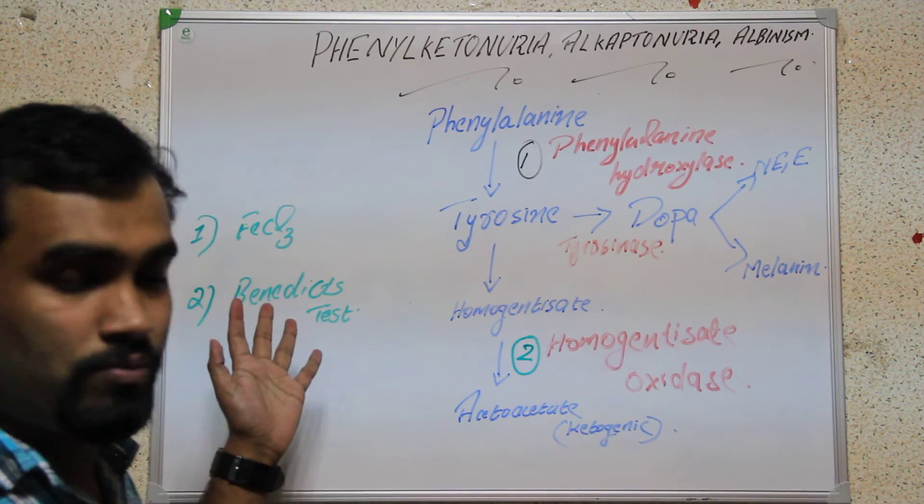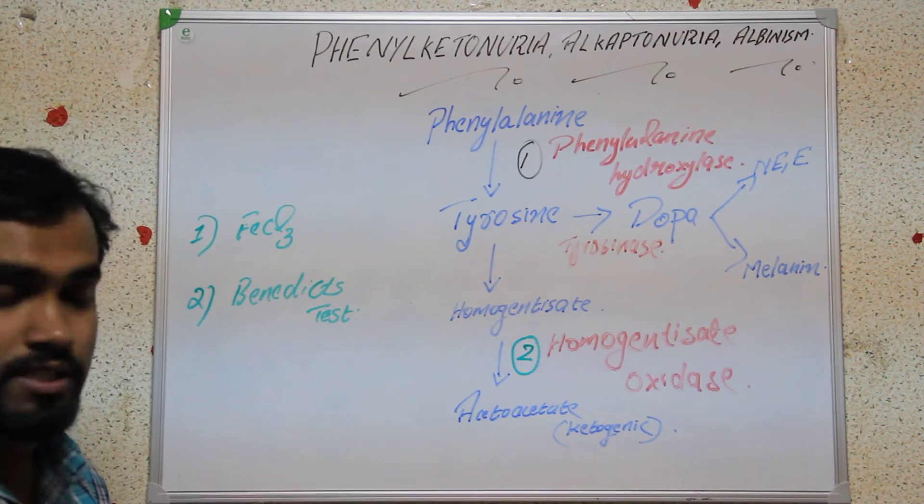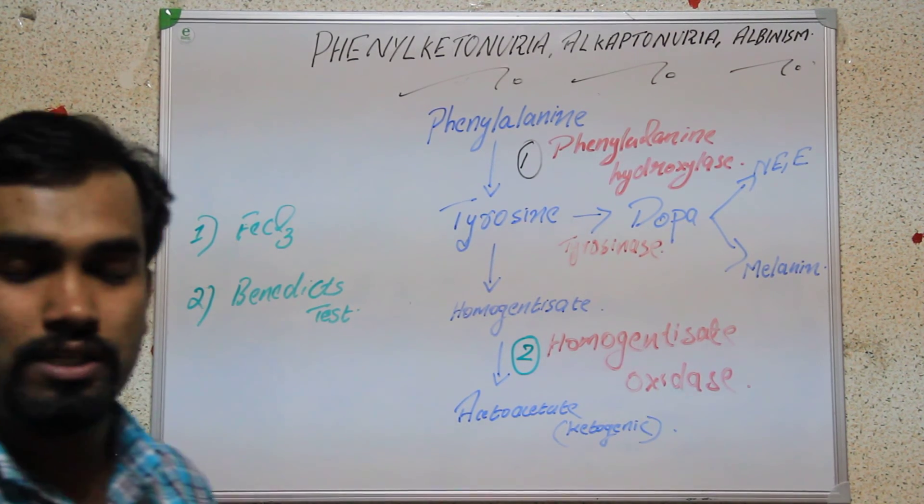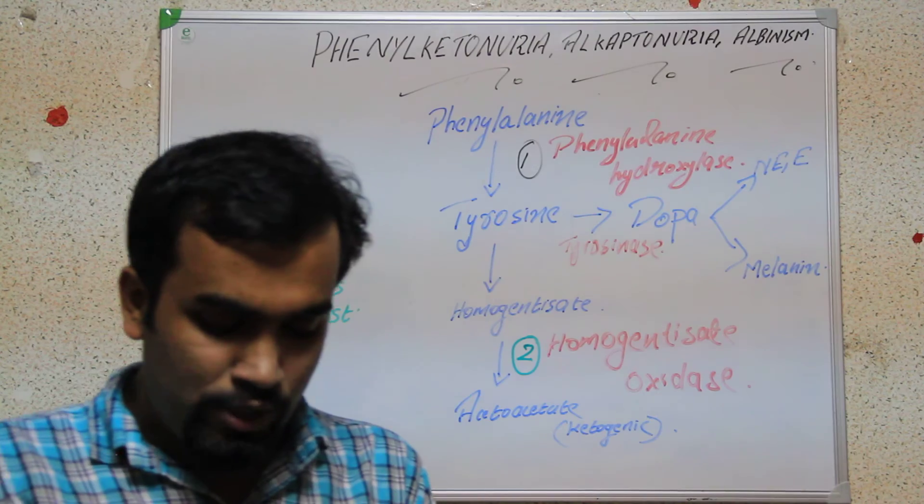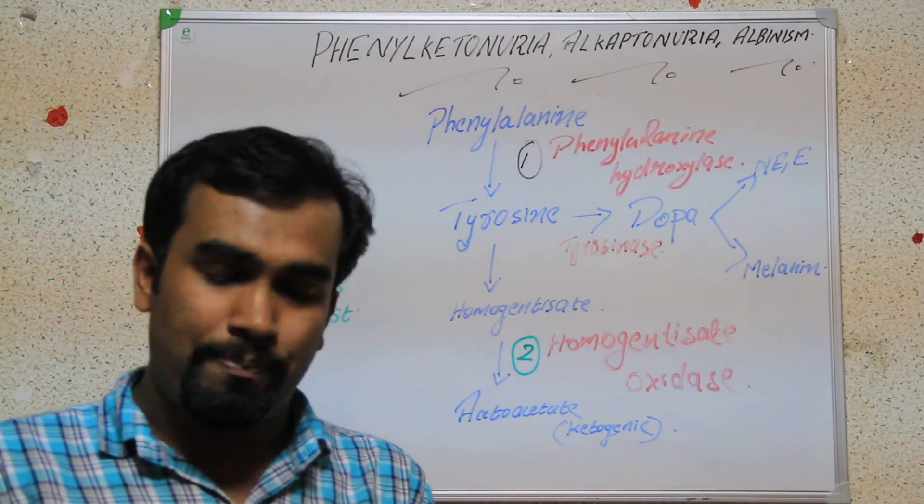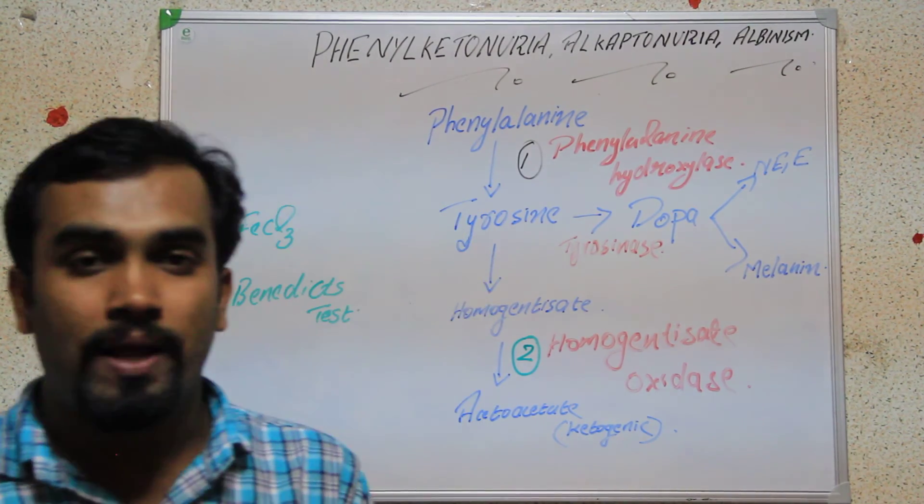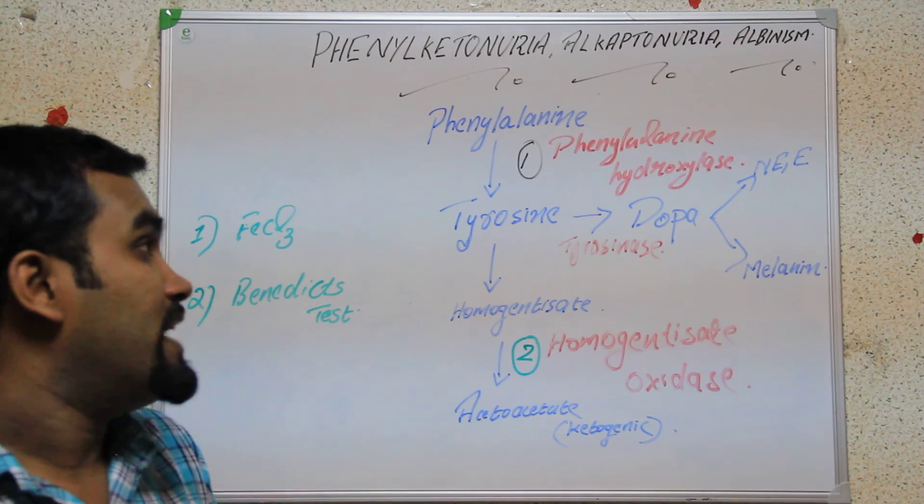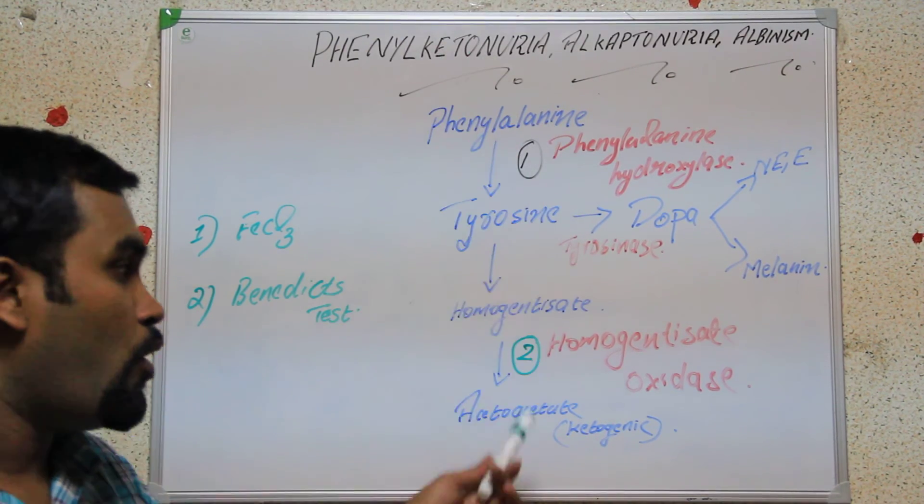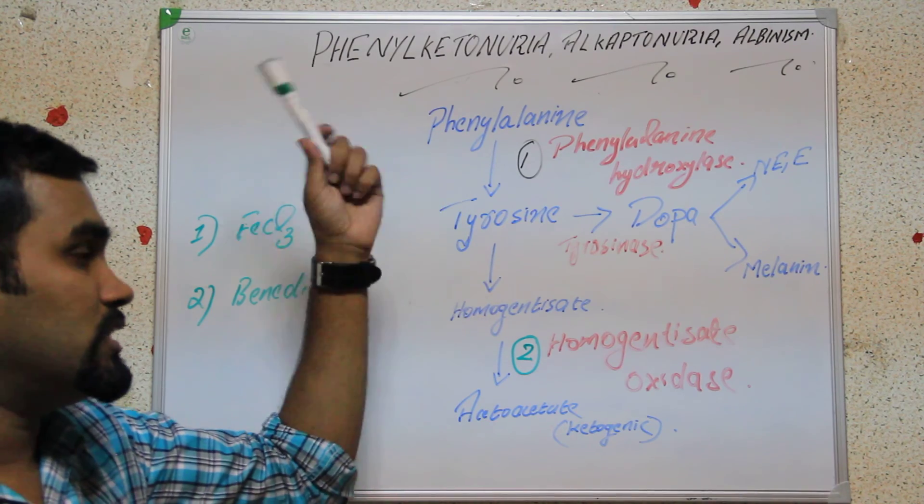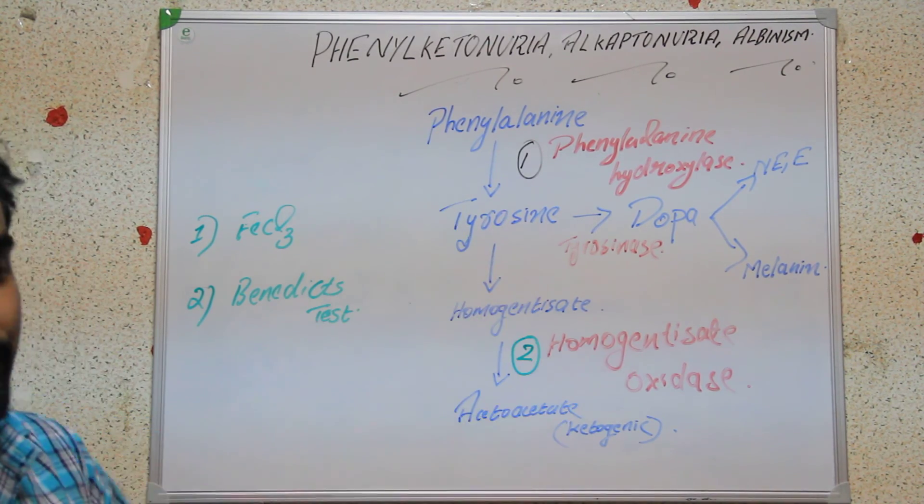We can diagnose and confirm this disease by ferric chloride test and Benedict's test. As I told in phenylketonuria, to reduce the symptoms or as a precaution, we can reduce diet rich in phenylalanine, as phenylalanine is a precursor. We have to reduce the diet rich in phenylalanine.